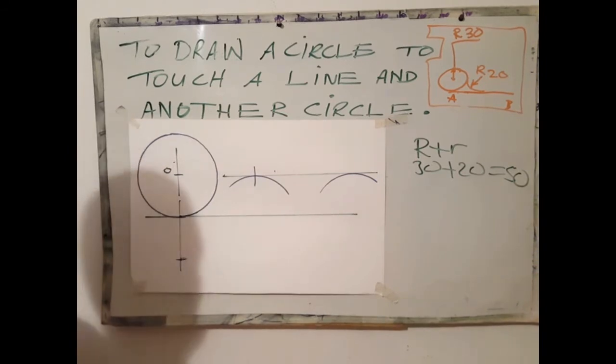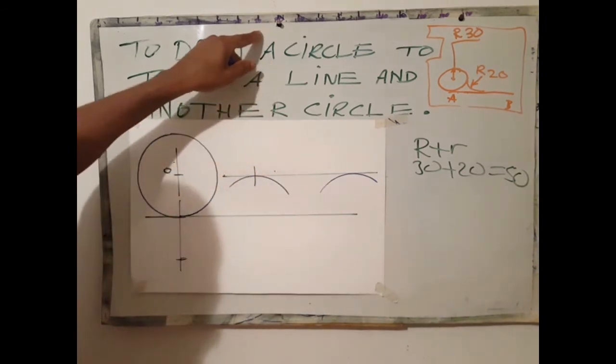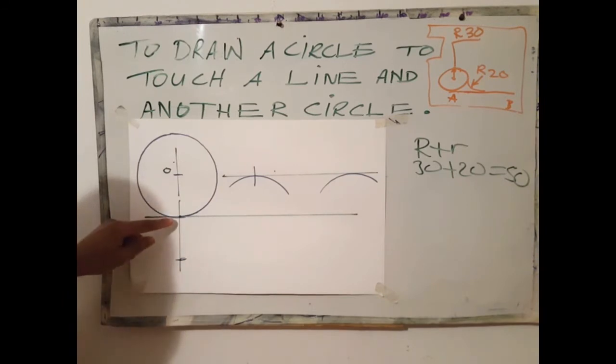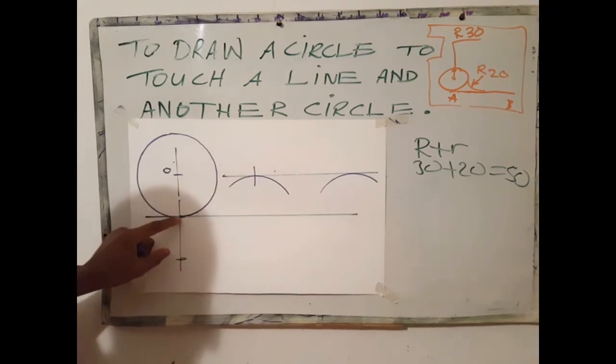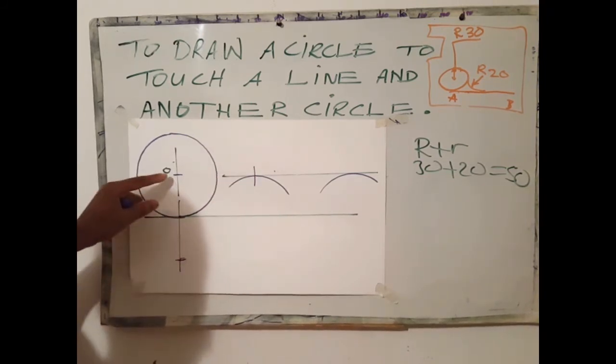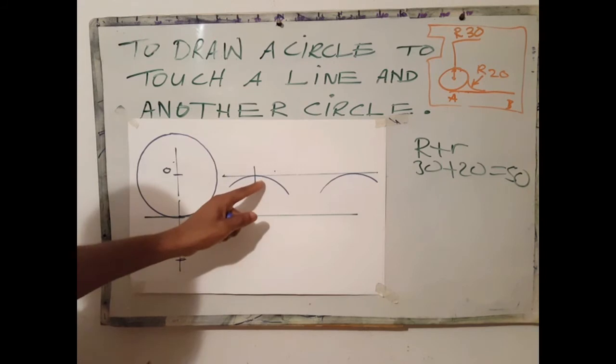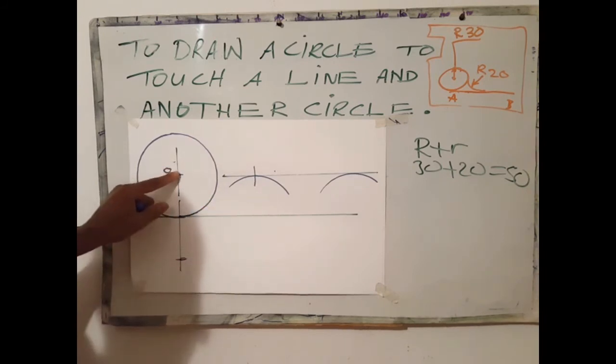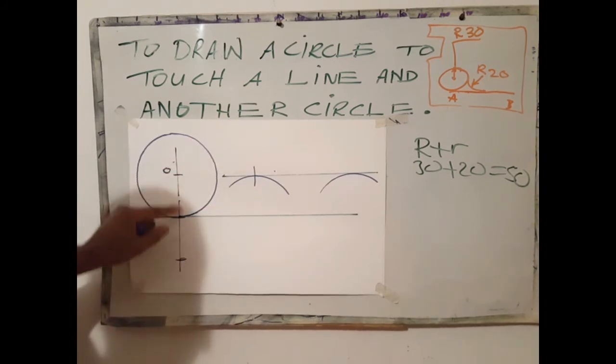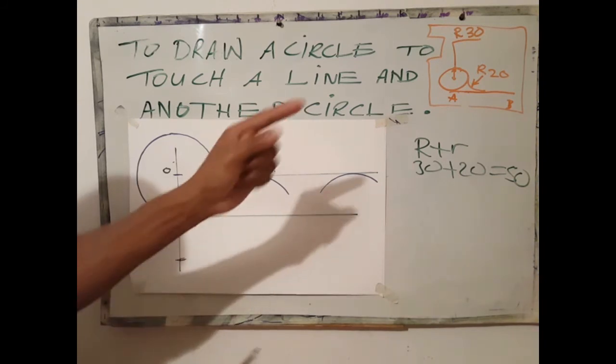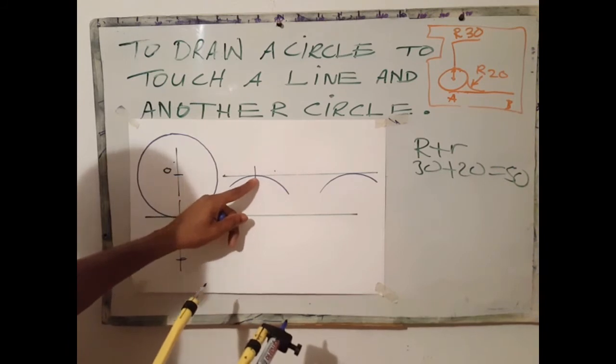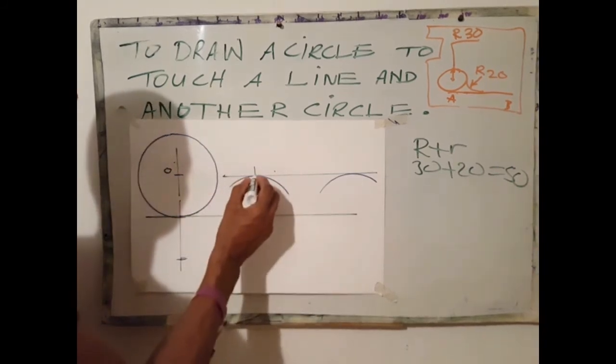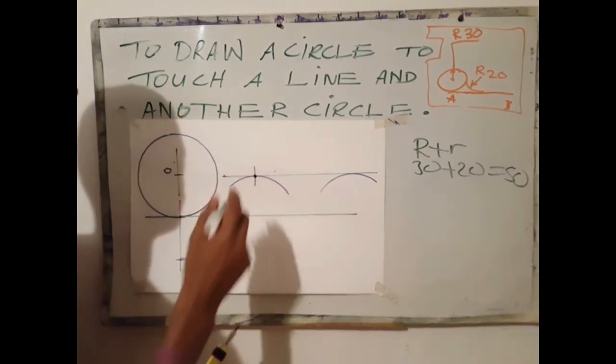What I just did instead of adding mathematically, I opened the compass to the parallel line, placed it here, and scribed an arc. So I added this radius to that radius which is 50. Using here as center I scribed an arc, this point becomes the center for my circle.